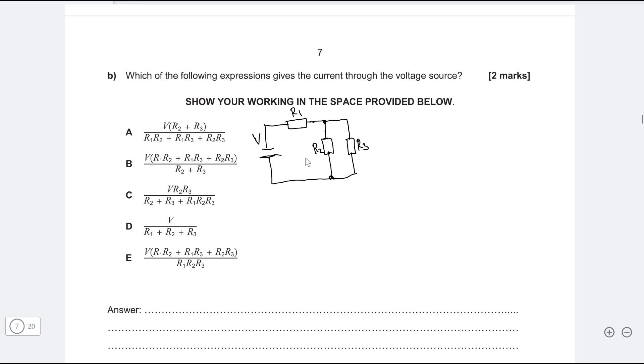Okay, well, I'm going to start off by finding the total current just in the parallel branch. So I'm going to call this, let's say, R subscript P for parallel. Well, this will just be equal to 1 over R2 plus 1 over R3 raised to the power of minus 1.